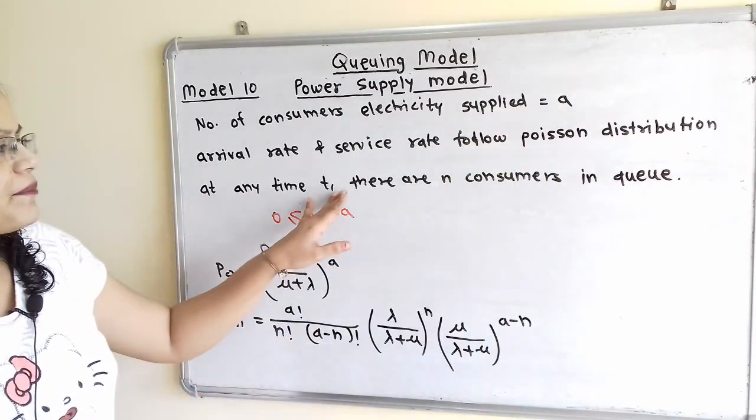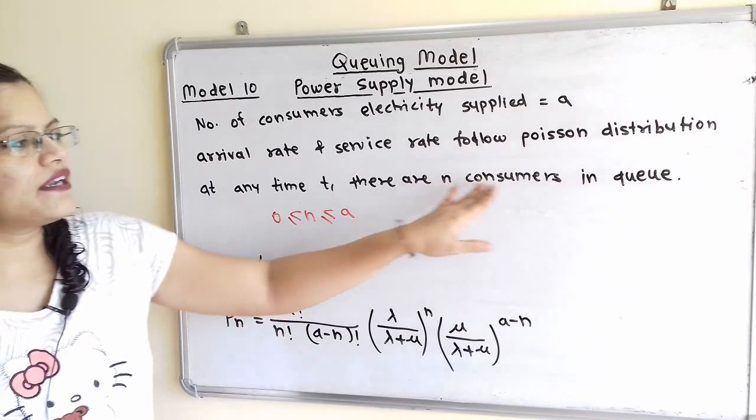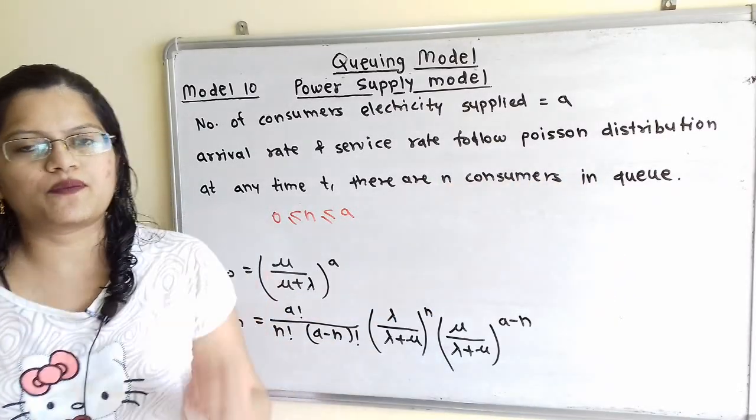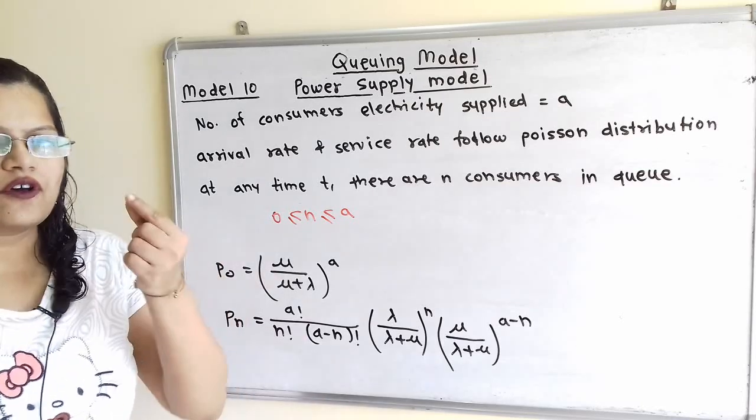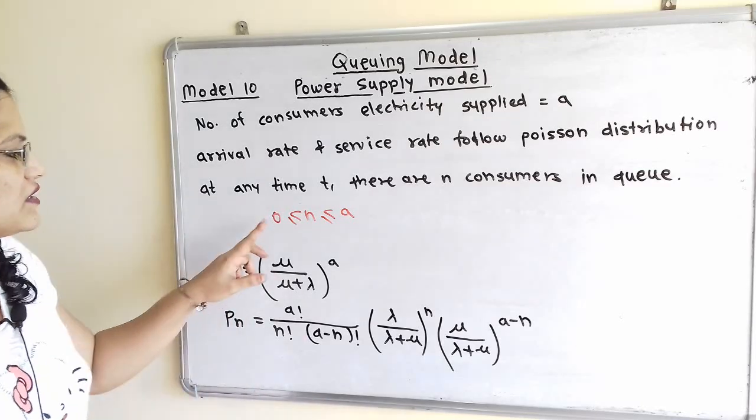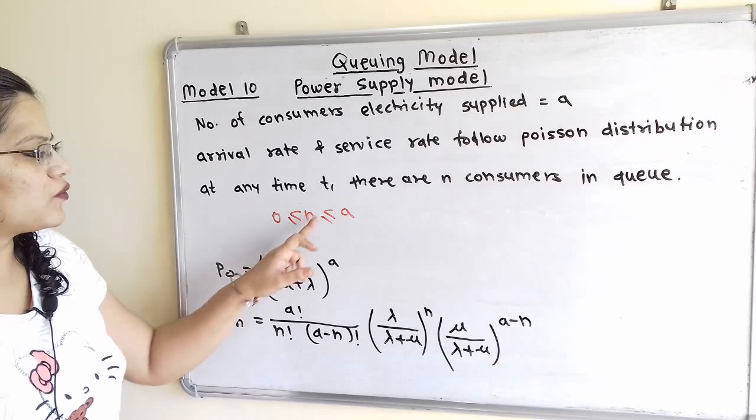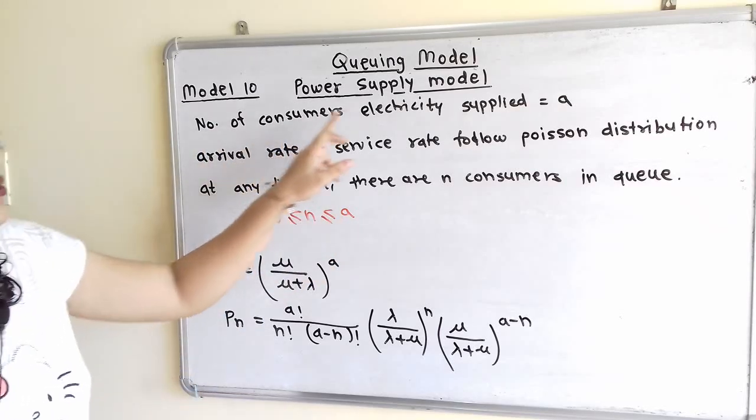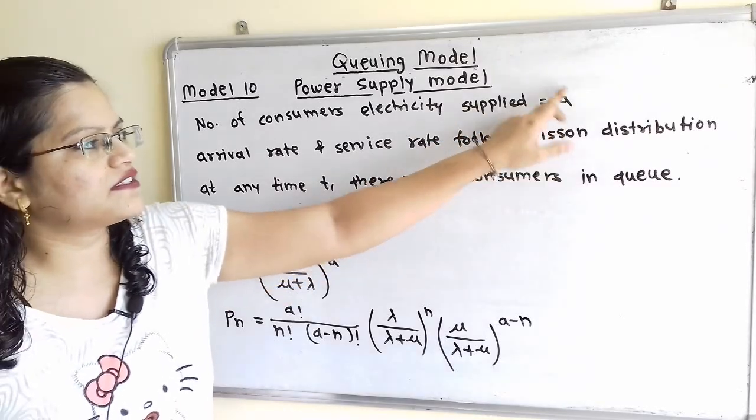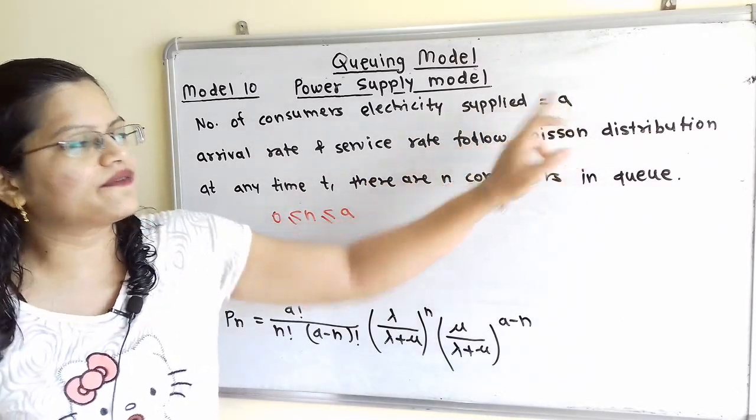At any time t, how do we calculate n number of consumers in queue? That is the probability of n number of consumers. For this n, there is one condition: 0 is less than or equal to n is less than or equal to a, because the number of consumers to which electricity is supplied is limited and given by a.